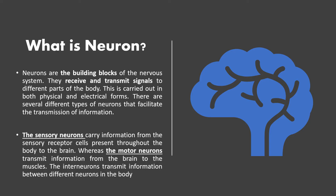What is a neuron? Neurons are the building blocks that receive and transmit signals to different parts of the body. Signals can be in physical or electrical form. There are several different types of neurons that facilitate the transmission of information. Two types are sensory neurons and motor neurons.